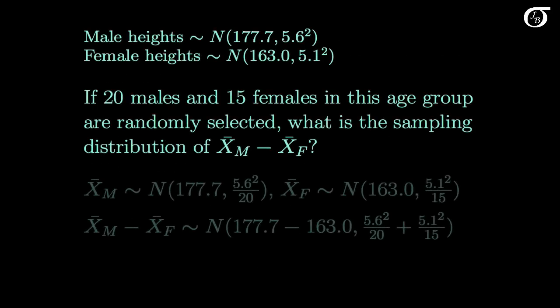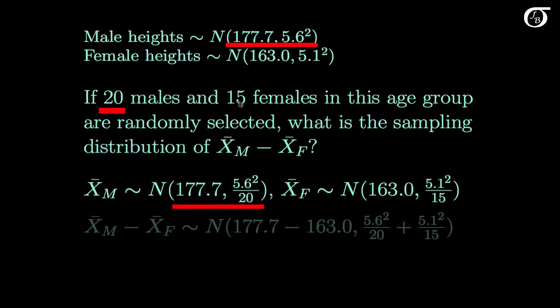If 20 males and 15 females in this age group are randomly selected, what is the sampling distribution of the difference in sample means? The sample mean of heights for males will have a mean equal to the population mean and a variance equal to the population variance divided by the sample size, and similarly for females. Since we are sampling from distributions that are approximately normal, the distributions of the sample means will be approximately normal as well.